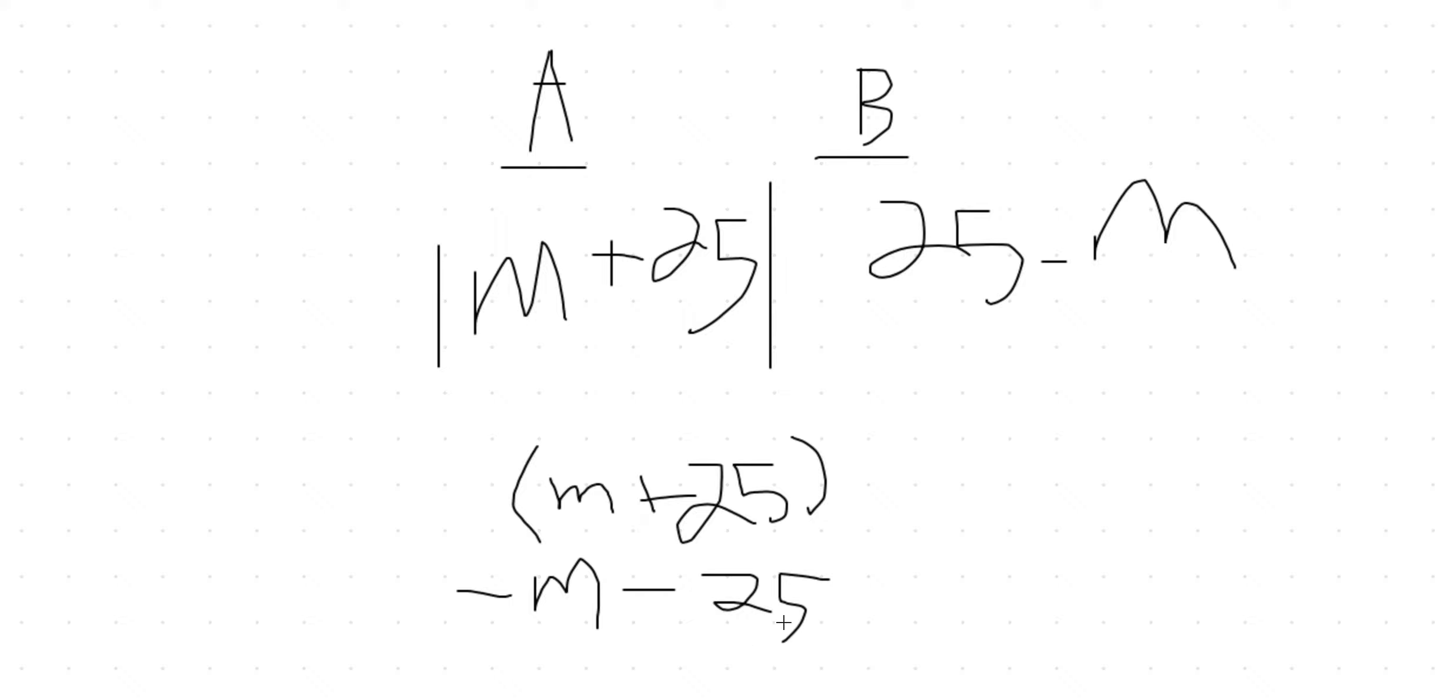Now we've got 25 minus m. Well, these cancel out, right? Plus 25 and plus 25, so you have m something negative and negative m, right? Well, if m is negative, that's definitely a question mark.